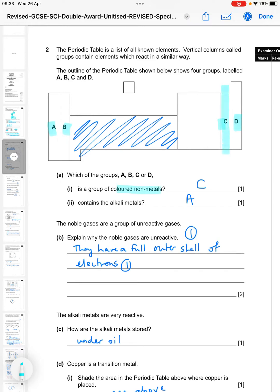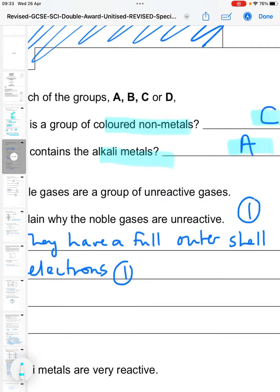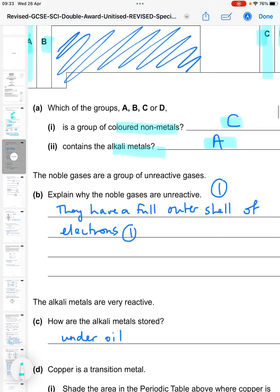So which of the groups A, B, C or D is a group of colored non-metals? So that's the halogens, so that is C. Which group contains the alkali metals? You know that's group one, so that is A. Now the noble gases are a group of unreactive gases. Explain why they are unreactive.